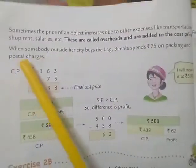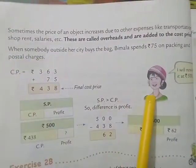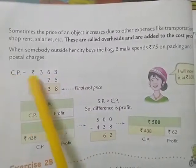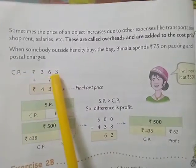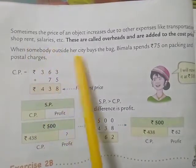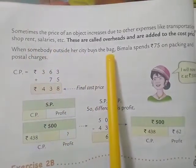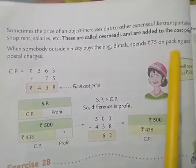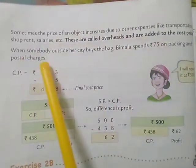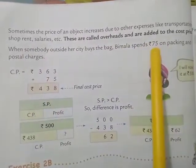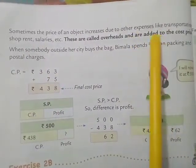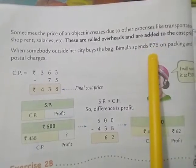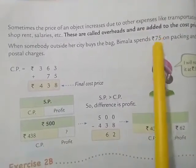For example, suppose Bimala making one bag that cost price is ₹363. When somebody outside her city buys the bag, Bimala spent ₹75 on packing and postal charges. So she spent extra amount for packing and postal charges. So this kind of charges called overheads.